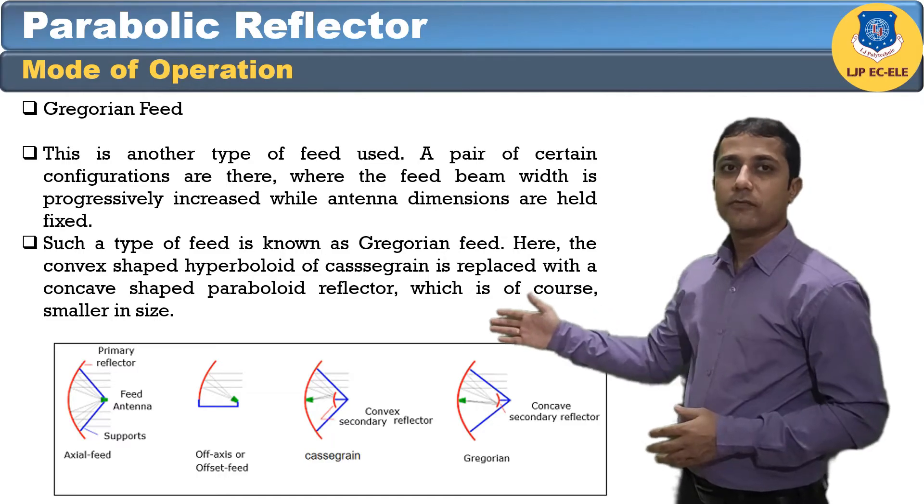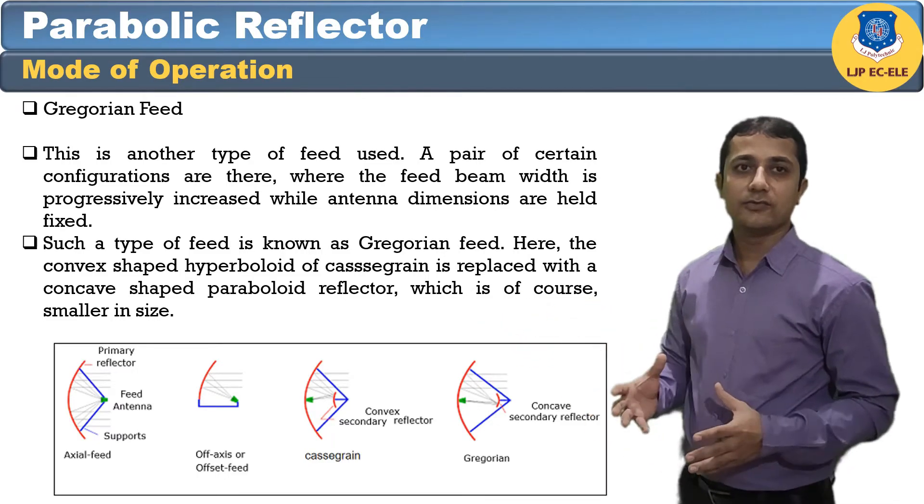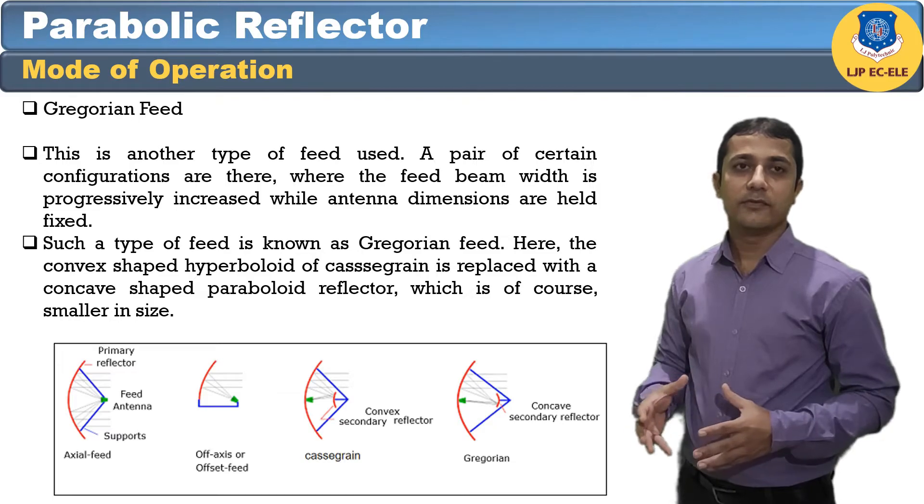The figure shows the four ways where we can use the Gregorian system as a feed line.